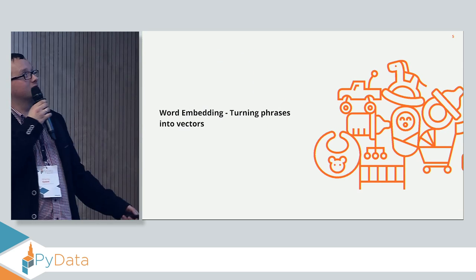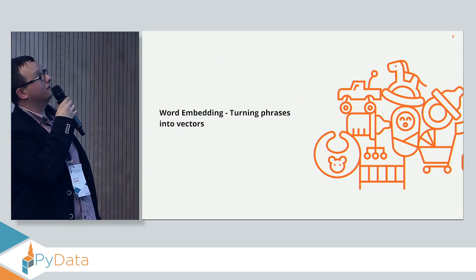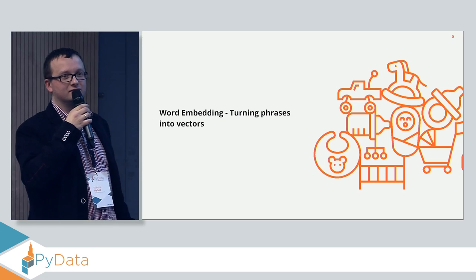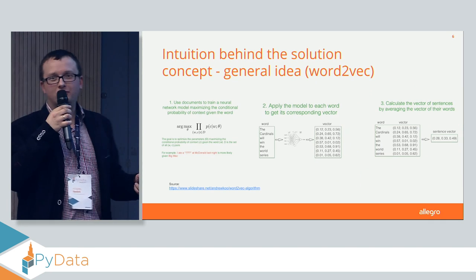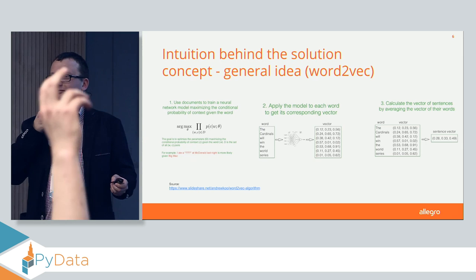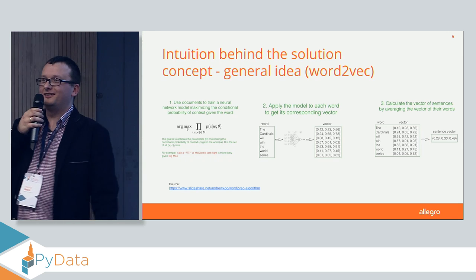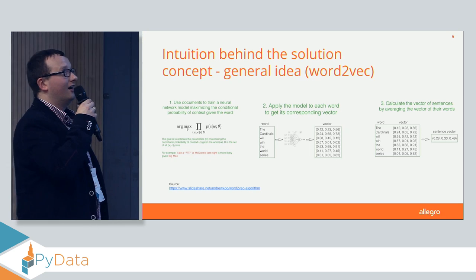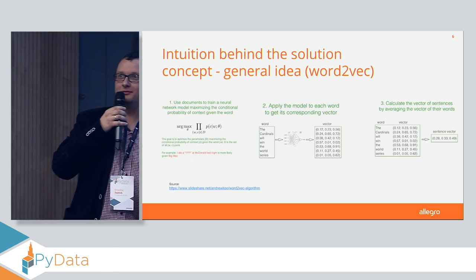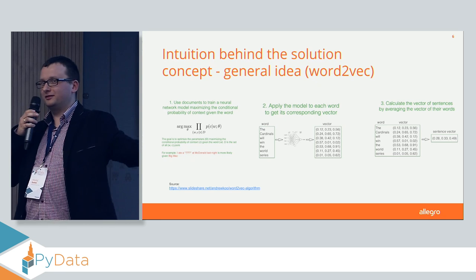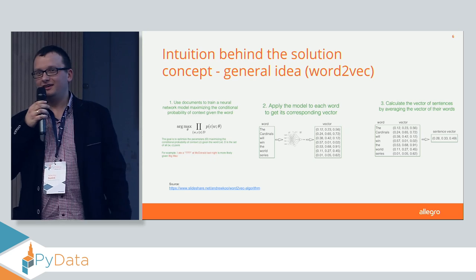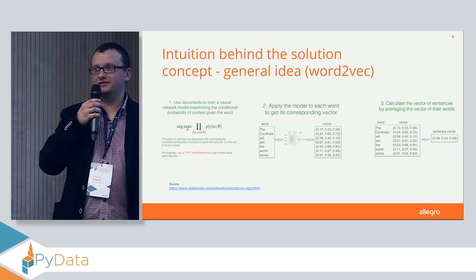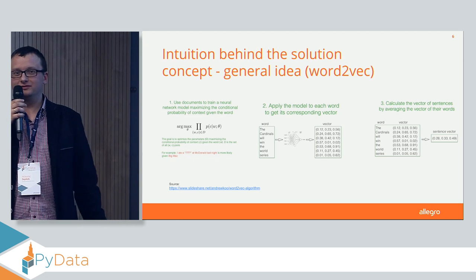To introduce the topic, I will tell you something about word embedding — turning words, sentences, or phrases into vectors. How many of you used Word2vec or GloVe? Quite a lot. So for people who didn't: when you have a word or sentence, you really don't want to one-hot encode it into very long vectors of zeros and ones, because it's very difficult to work with such data, especially with very large corpuses.